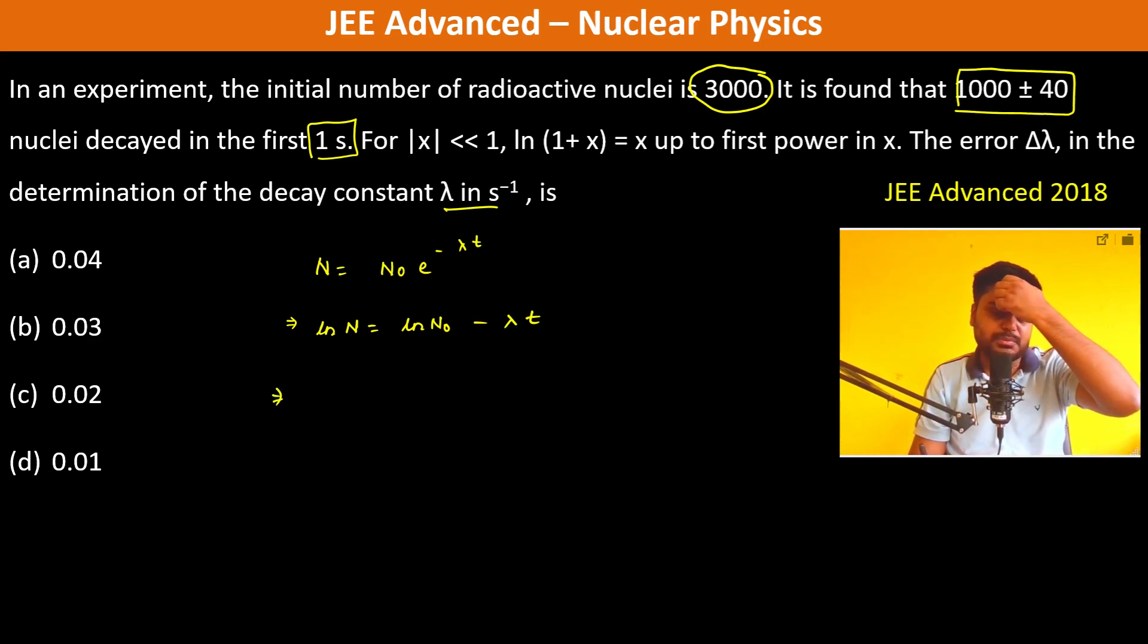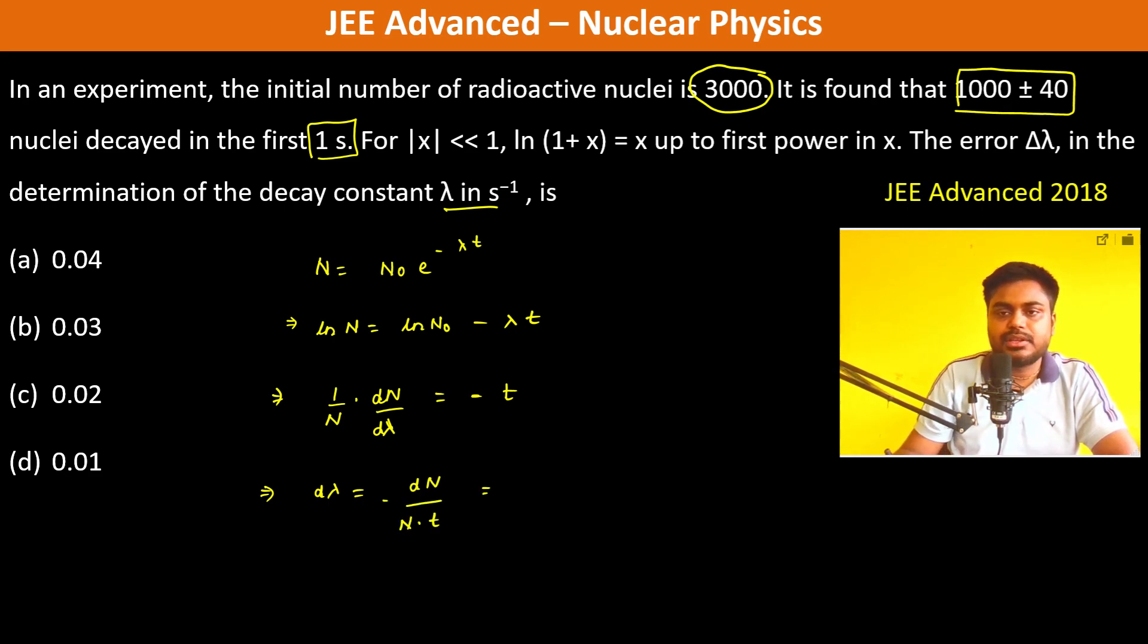with respect to λ. Therefore, (1/N)(dN/dλ) = -t. So Δλ = ΔN/(N·t). What is ΔN?